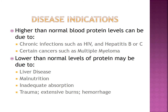Higher than normal blood protein levels are associated with various diseases such as chronic infections involving HIV, hepatitis B, and hepatitis C. It is also associated with various cancers such as multiple myeloma. Lower than normal protein levels can be due to liver disease, malnutrition, inadequate absorption, and often times a result of trauma involving extensive burns and hemorrhage.